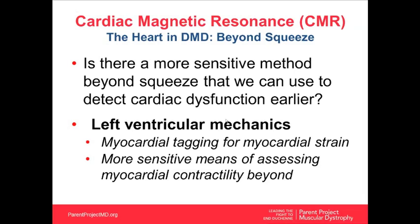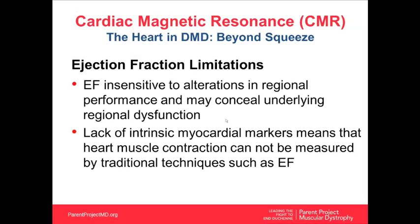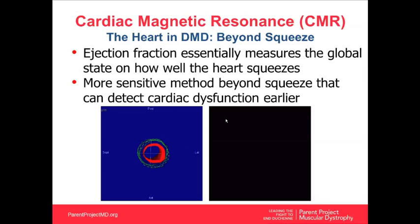In conjunction with looking at scar, we want a more sensitive method beyond squeeze to detect cardiac dysfunction earlier. We've been working on left ventricular mechanics — specifically myocardial tagging for myocardial strain — to define a more sensitive means of assessing myocardial contractility. The limitation of ejection fraction is that it's insensitive to alterations in regional performance; areas with some scar may have normal global EF, which actually conceals and underestimates how far advanced the disease is. EF also lacks the intrinsic ability to detect myocardial deformation directly.